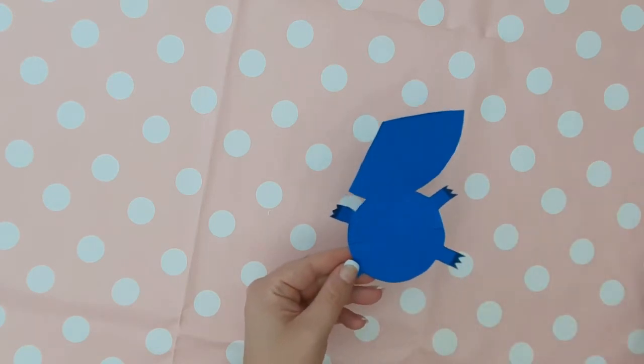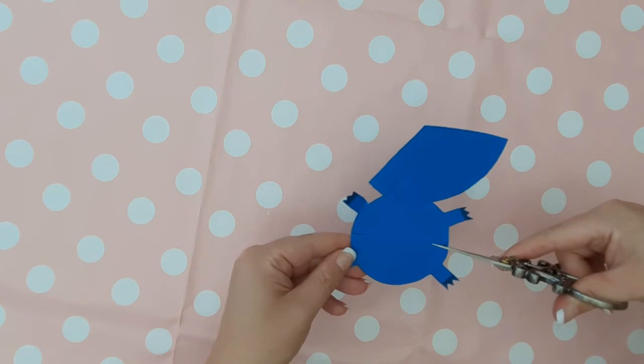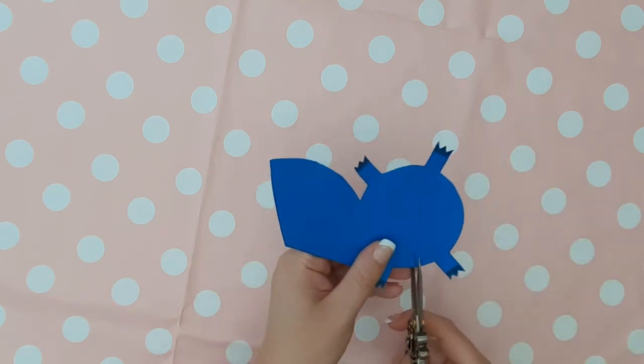When you've cut the whole body out, there are two little lines on either side of the body about a centimeter long. You want to just snip those.